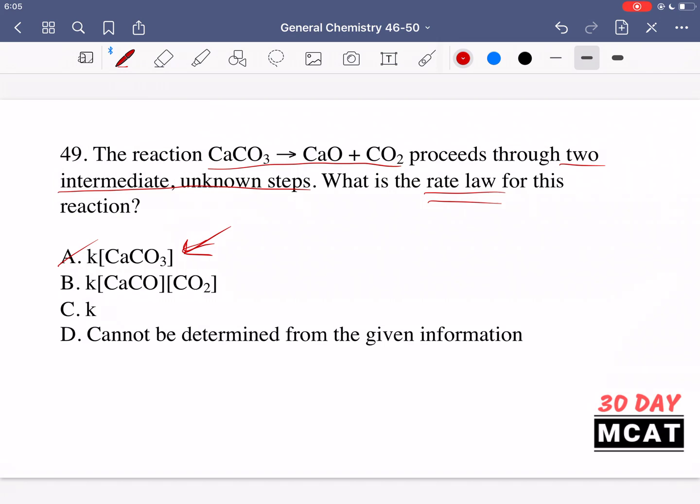Because we don't know those unknown steps, we can't say anything really about the rate law. We can't say that it is dependent on just these reactants. We'd have to know what these steps are and we'd have to determine this experimentally. So it's not something that we can determine from the given information.